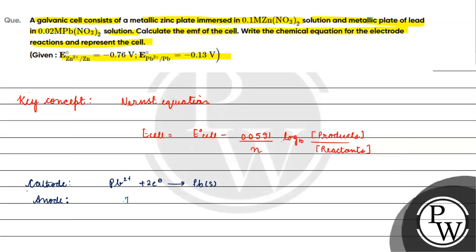Then oxidation will be of zinc. Zinc will give zinc 2+. The overall reaction is Pb2+ plus Zn solid gives us Pb solid plus Zn2+.